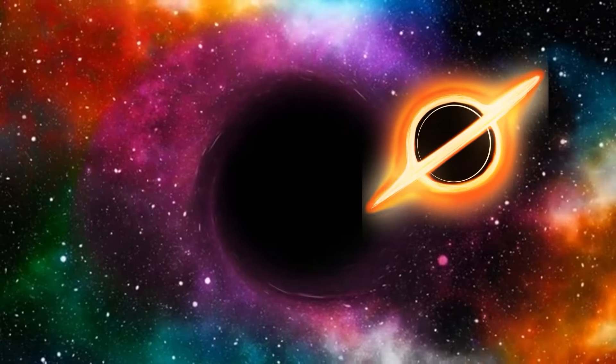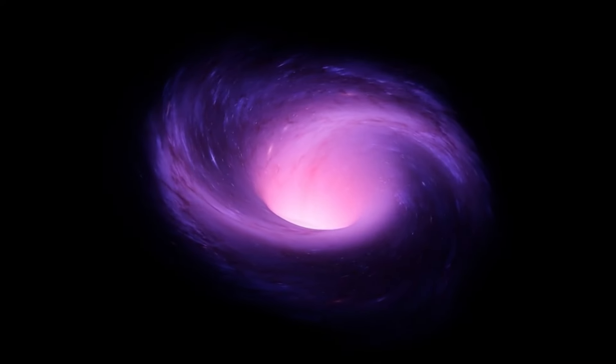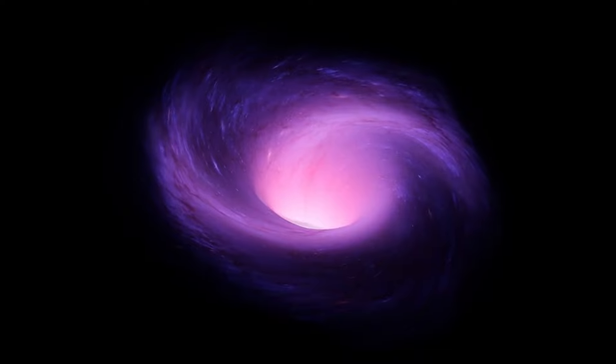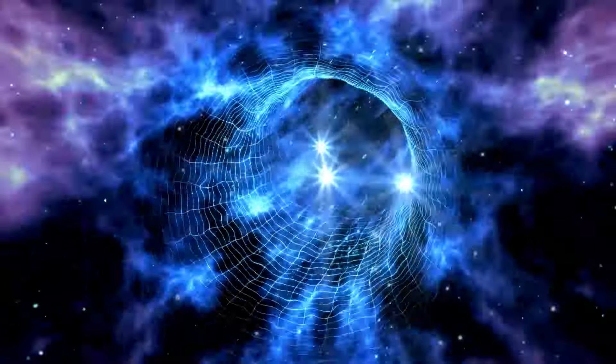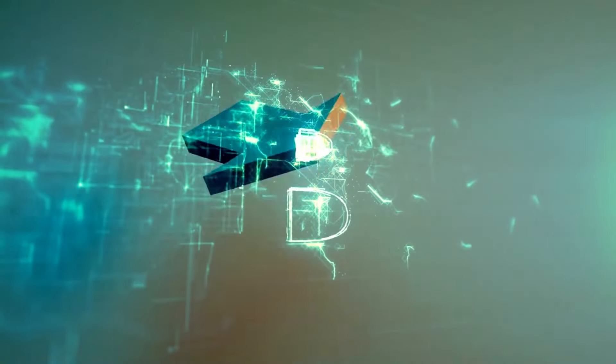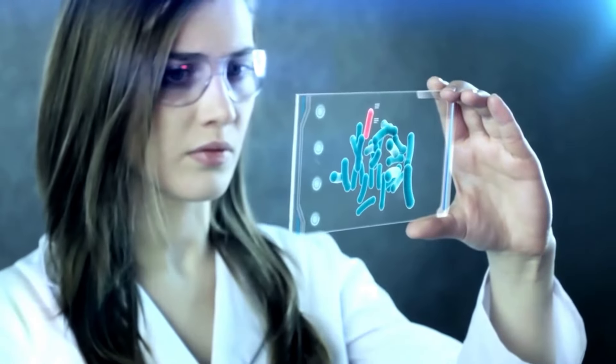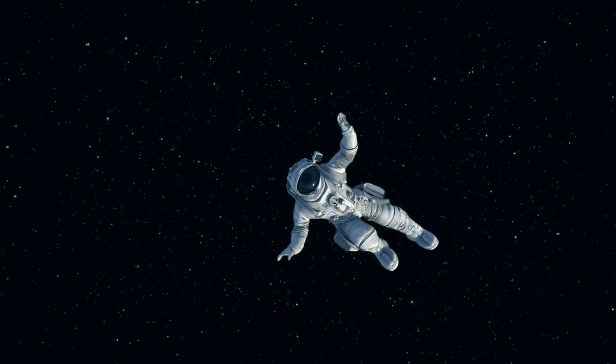Do you remember before when we imagined the space-time plane as a blanket? Well, now let's imagine if this blanket was folded over onto itself. The presence of a supermassive object such as a black hole could create an indent so deep that it creates a hole through both layers of the blanket, seemingly connecting them. Well, this is the idea of a wormhole. An object that bends the space-time plane in a way that can connect two distant regions of the universe in a type of tunnel.